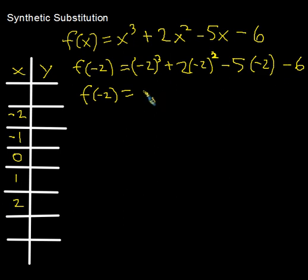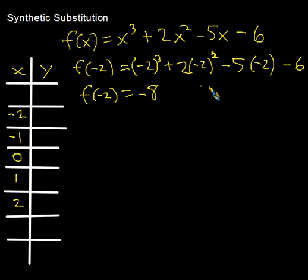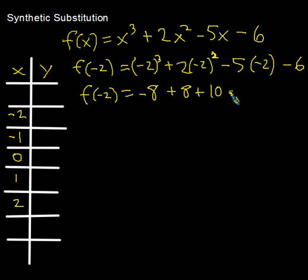Pause the video and see what you get, then let's compare. Negative 2 cubed is negative 8. Negative 2 squared is positive 4, times 2 is plus 8. Negative 5 times negative 2 is plus 10, and then minus 6. The negative 8 and plus 8 cancel, so that's 0; 10 minus 6 equals 4.